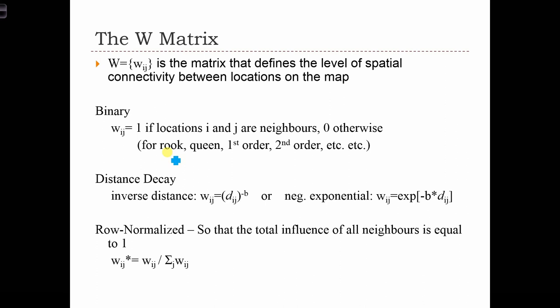For the Rook case, we're only going to consider Rook type neighbors. Say if this is I, then I is going to be neighbors with J1, J2, J3, and J4.